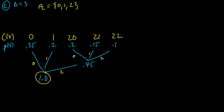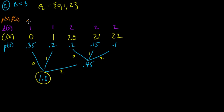That's the Huffman procedure giving us our codewords, guaranteed to be an optimal ternary code. Let's compute the expected codeword length. The lengths are: one, one, two, two, and two. Computing the products of probabilities and lengths: 0.35, 0.2, 0.4, 0.3, 0.2. Adding those up: 0.5 plus 0.6 is 1.1, plus 0.35 gives 1.45.